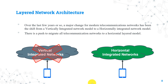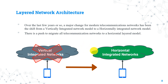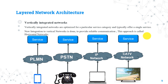In mobile networks, we have two types: vertically integrated networks or horizontally integrated networks. In the past, most mobile operators were using the vertical integrated model, but currently, due to a major change in modern telecommunications networks, there has been a shift from a vertically integrated network model to a horizontally integrated network model. There is a push to migrate all telecommunication networks to a horizontal layered model, which has already happened now.